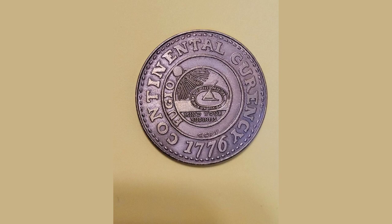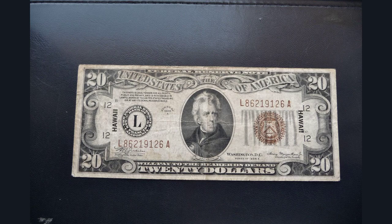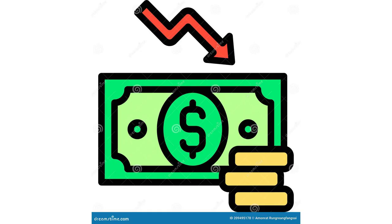Section 2: The Continental Currency. During the American Revolution, the Continental Congress issued the Continental Currency as a means to finance the war effort. Printed on paper, these notes quickly lost their value due to overprinting and lack of confidence in their backing. The phrase "not worth a continental" emerged, highlighting the currency's rapid depreciation.